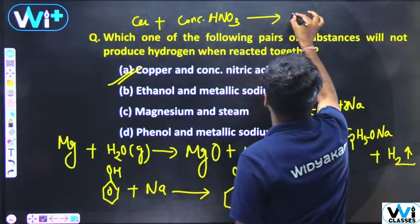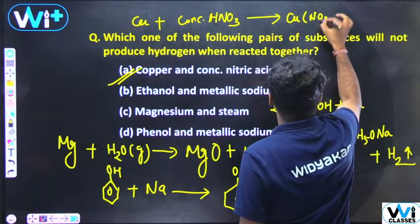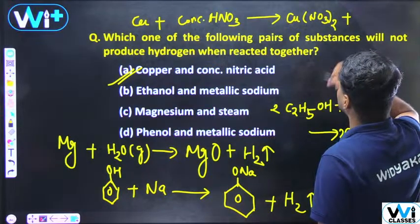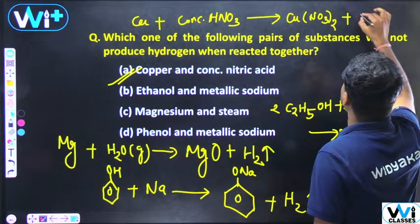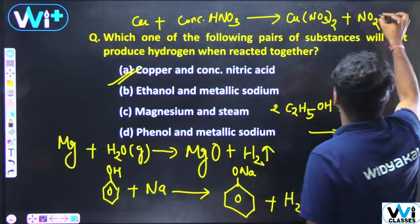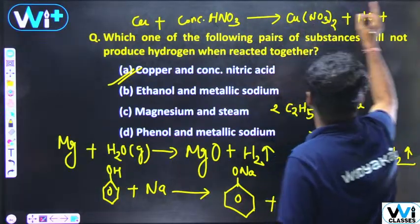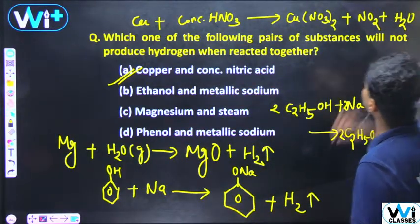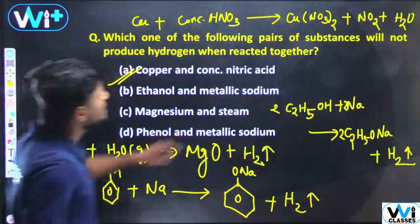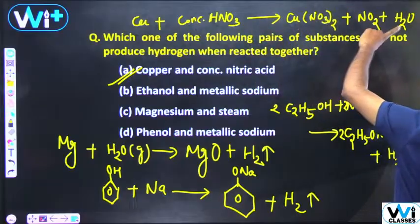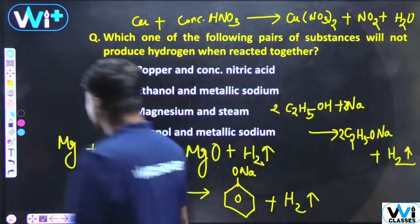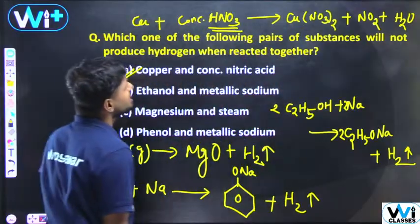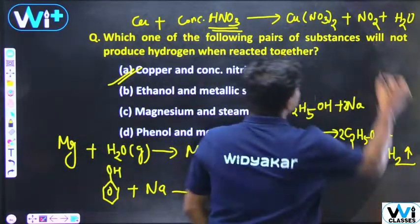Copper with HNO₃: HNO₃ is a strong oxidizing agent, so copper nitrate Cu(NO₃)₂ is formed along with NO₂ gas and water — hydrogen gas is NOT released. HNO₃ is a strong oxidizing agent; instead of hydrogen, NO₂ gas and water are the products.